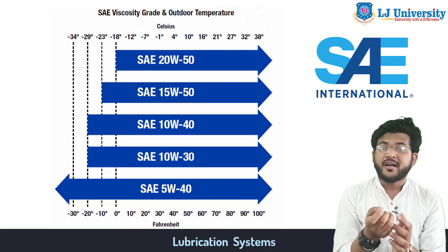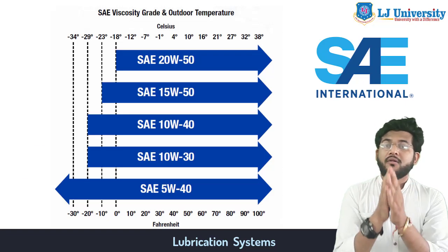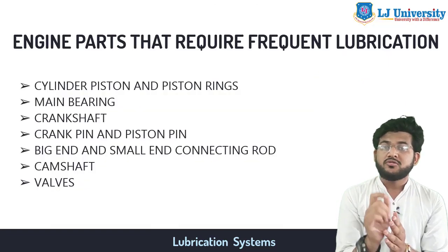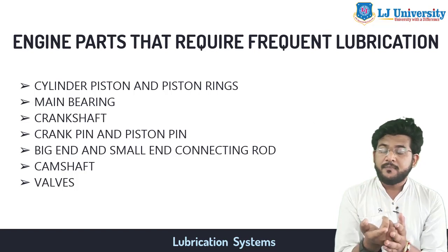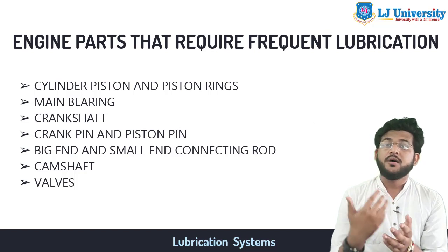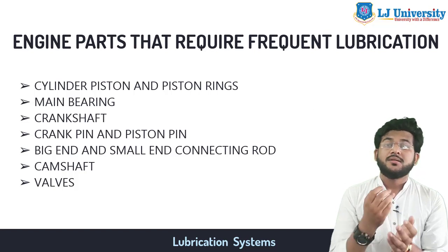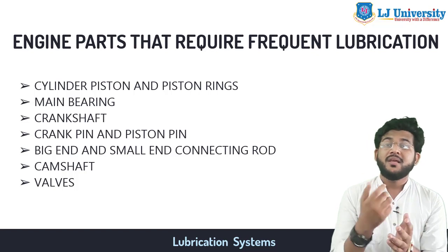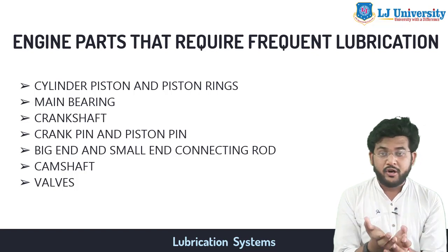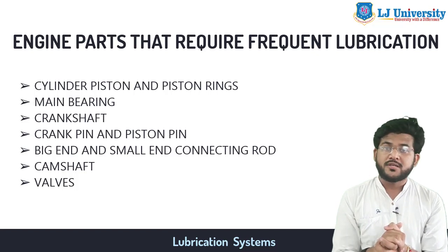So if it is 5W-40, that means it has the viscosity range of both 5W and 40. Now let us see which are the main parts that actually require lubrication: cylinder, piston, piston rings, main bearing, crankshaft, crank pin and piston pin, big end and small end of the connecting rod, and camshaft and valves. These are the main moving parts, so they need lubrication.